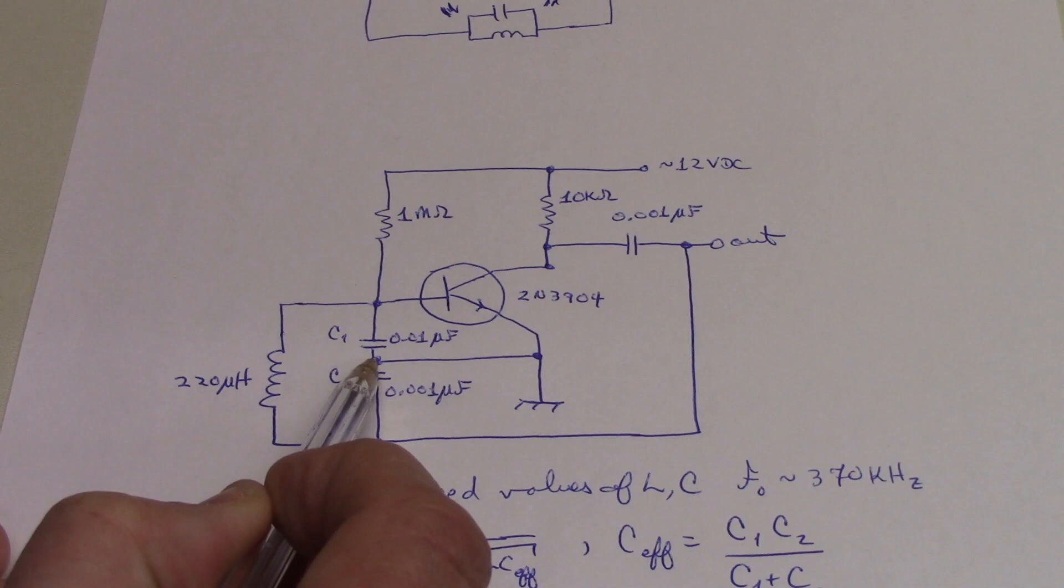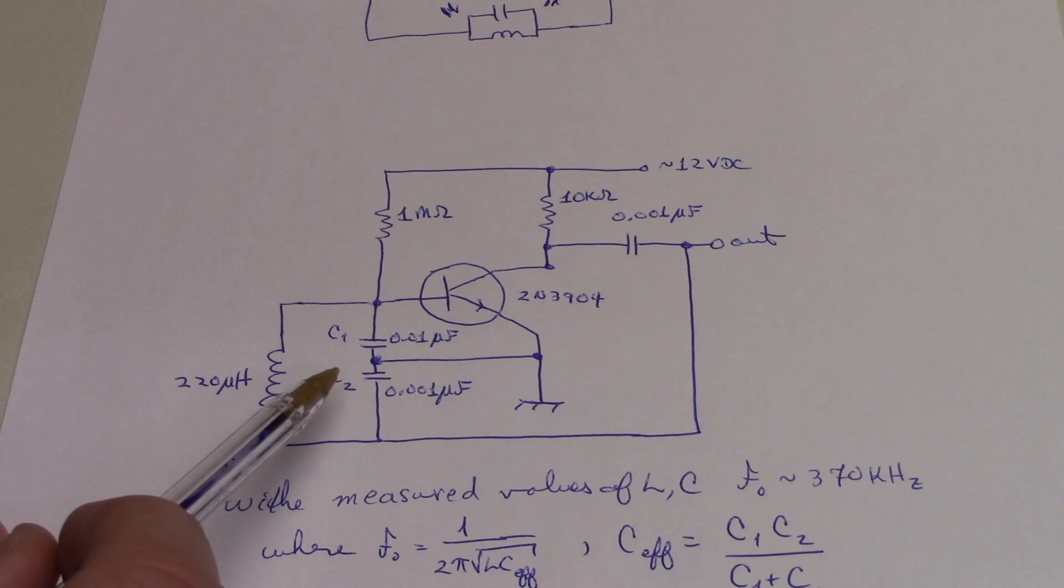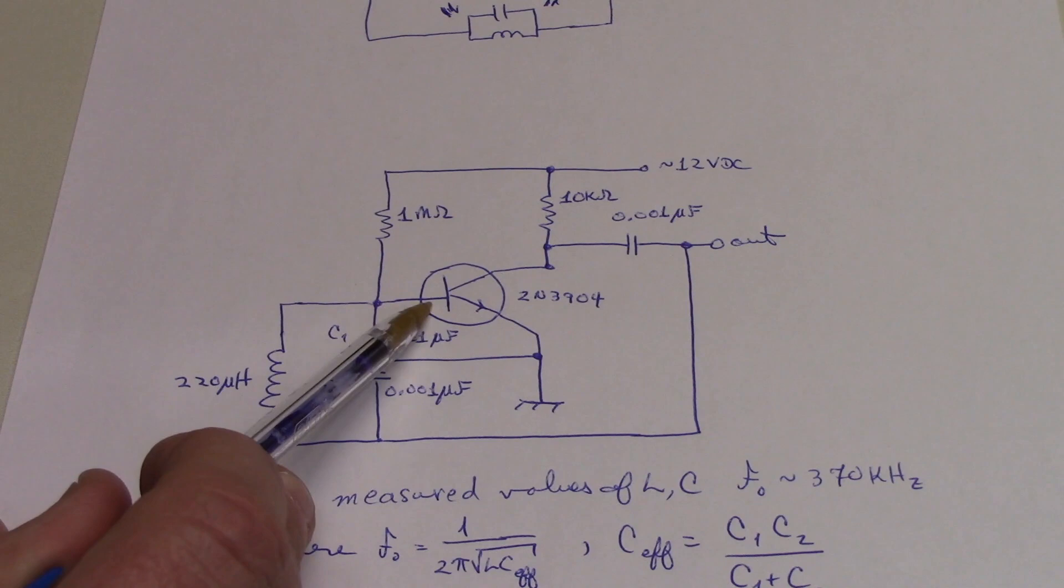So here are the two series capacitors that we talked about just a moment ago. And notice that they're grounded here at the junction. And what this does is these two capacitors together form a voltage divider.